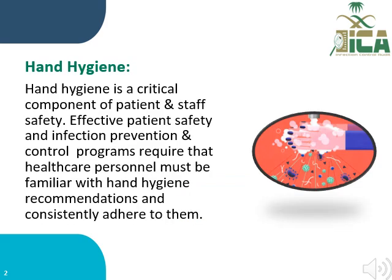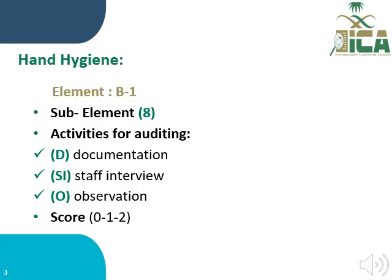Before we talk about hand hygiene program auditing, we should mention that hand hygiene is a critical component of patient and staff safety. Effective patient safety and infection control programs require that health personnel be familiar with hand hygiene recommendations. Hand hygiene is in domain B, element number 1. It has eight sub-elements, and the auditing activities require documentation, staff interview, and observation. Scoring will be 0, 1, or 2.